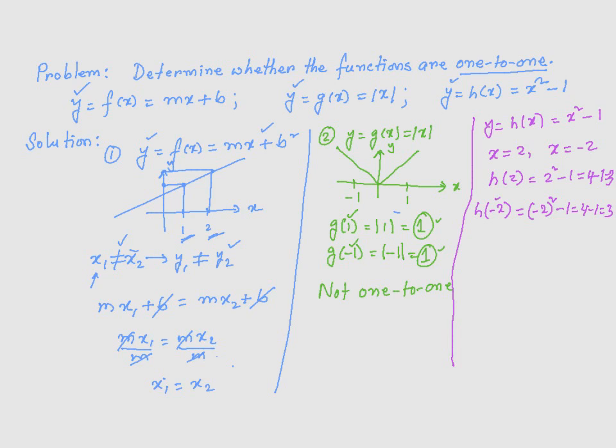See? We have negative 2 and 2 are two different x values. However, h(2) is the same as h(-2), which, by the way, is just 3. So, this function is also not one-to-one.